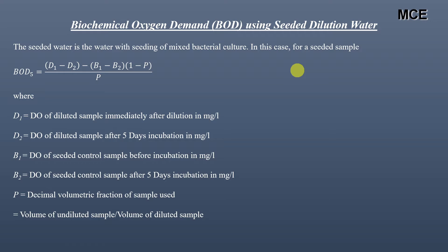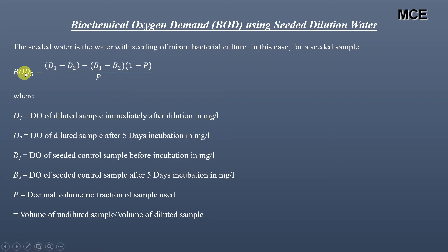Sometimes seeded water is used for the dilution of the BOD test. This seeded water is water with the seeding of a mixed bacterial culture. In this case, for the seeded sample, BOD5 at 20 degrees centigrade is given by the formula: BOD5 = (D1 - D2) - (B1 - B2) × (1 - P) / P.